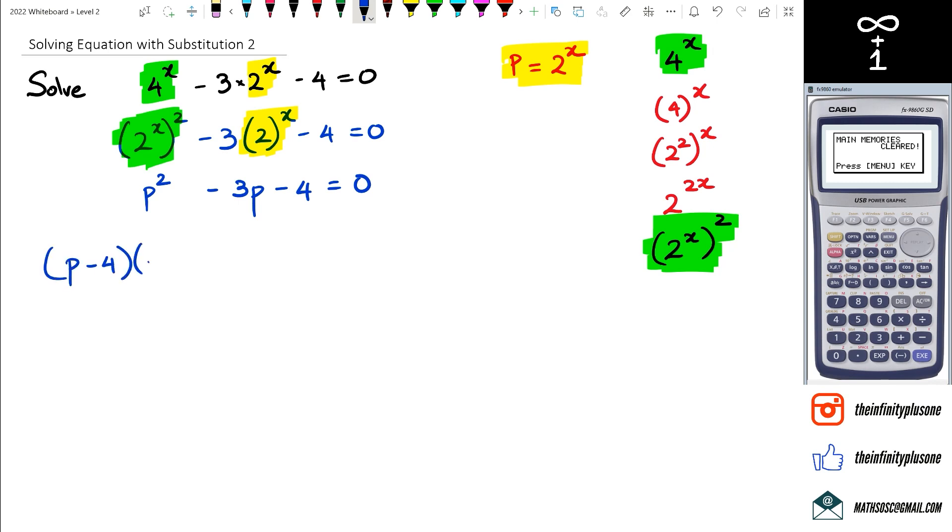So we can say that P - 4 = 0, so P = 4. On the other side we've got P + 1 = 0, which means P = -1. But remember, in this video we're actually trying to figure out what x is.